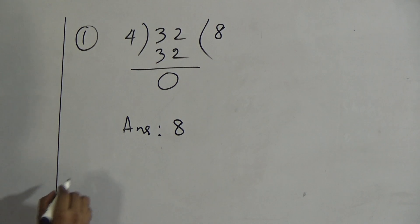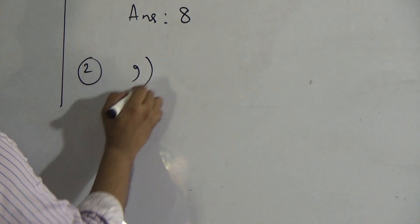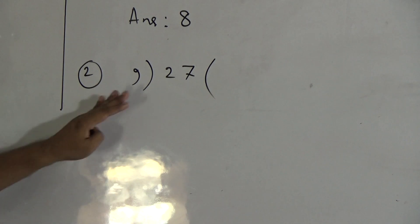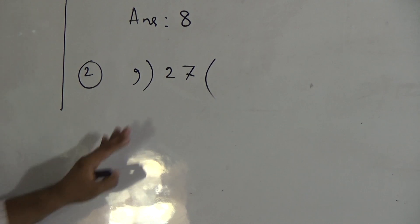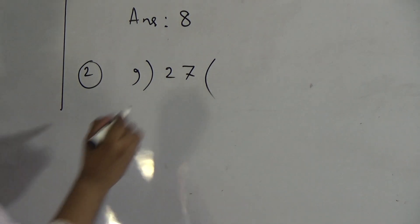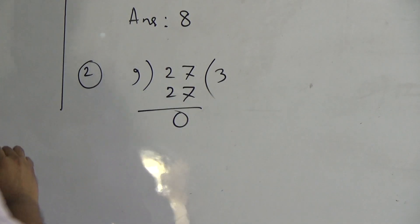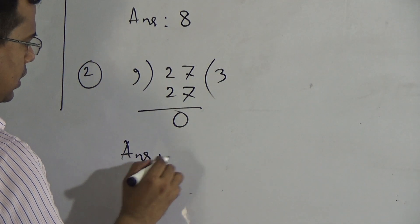Dear students, now we will do number 2: we will divide 27 by 9. So we will count the times tables of 9: 9 zeros are 0, 9 ones are 9, 9 twos are 18, and 9 threes are 27. If we give 3 times, then it should be 27. Now 27 minus 27 equals 0. So the answer is 3.